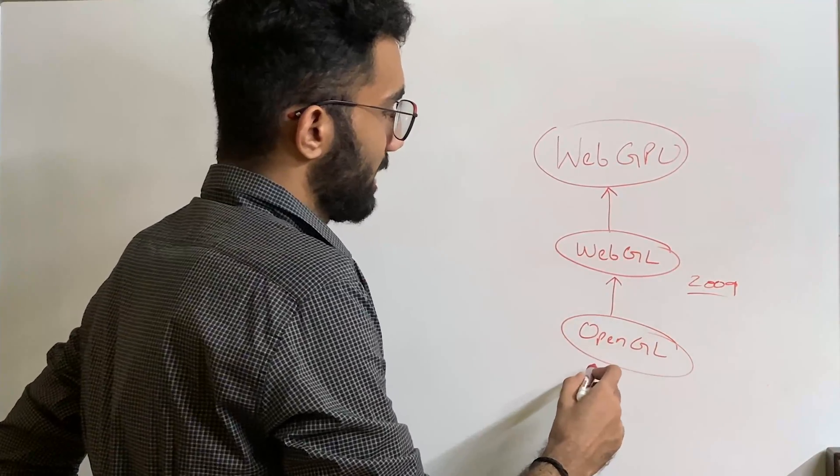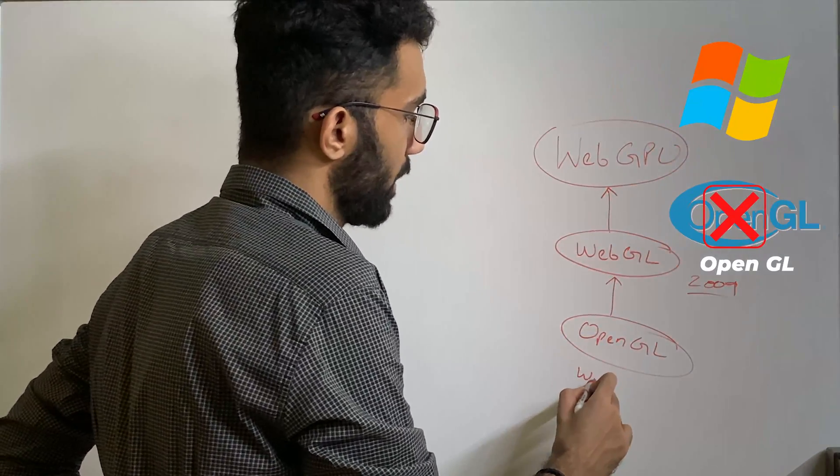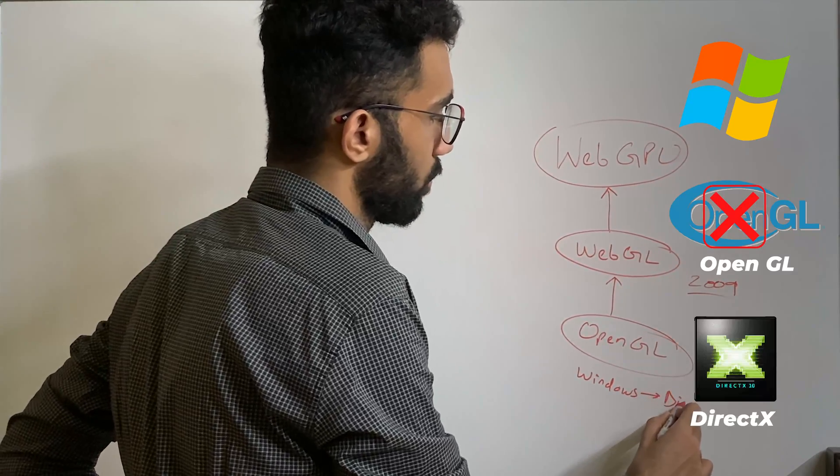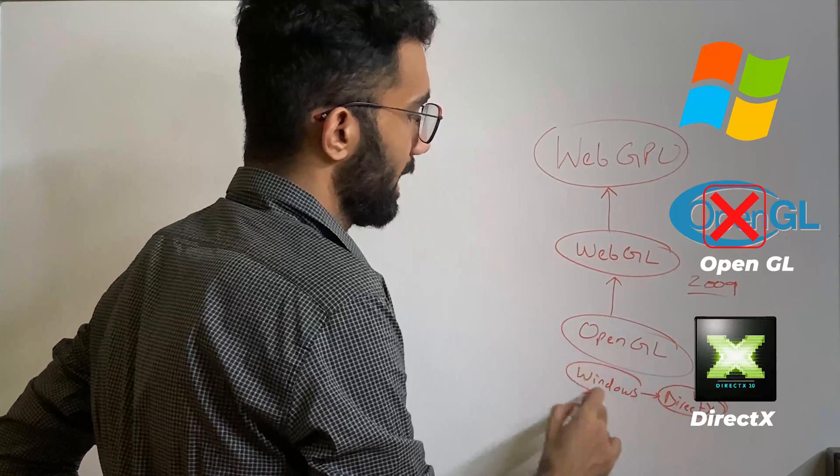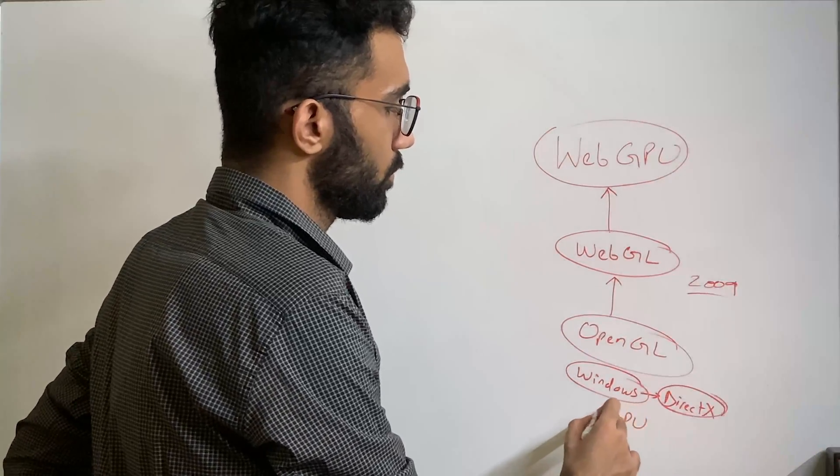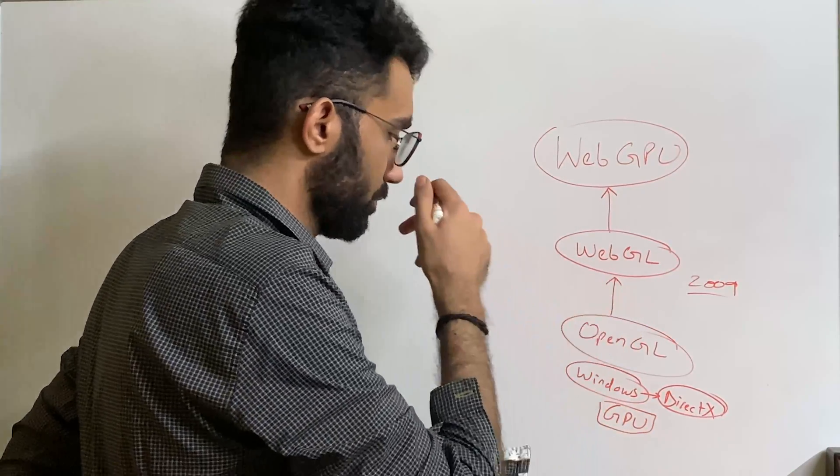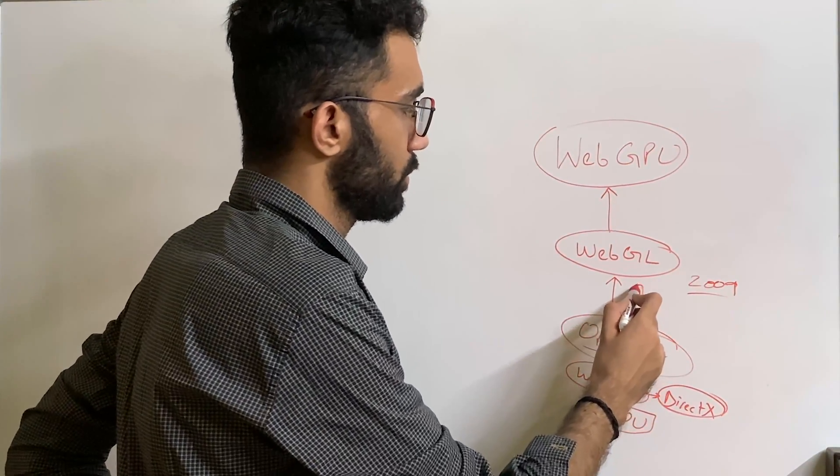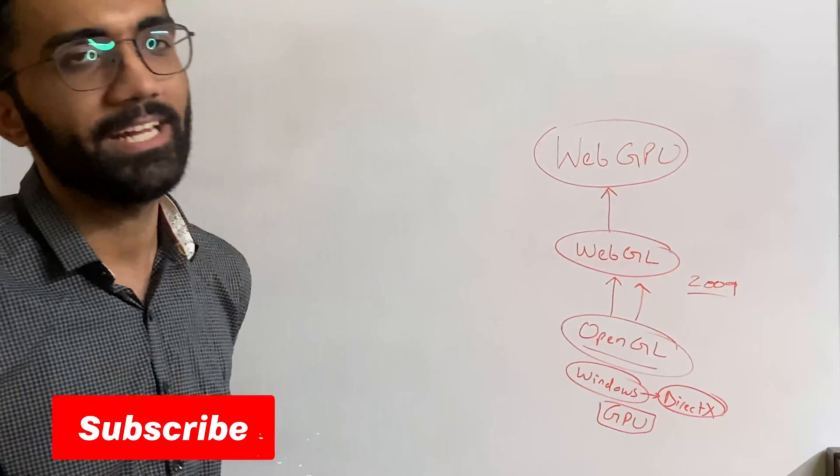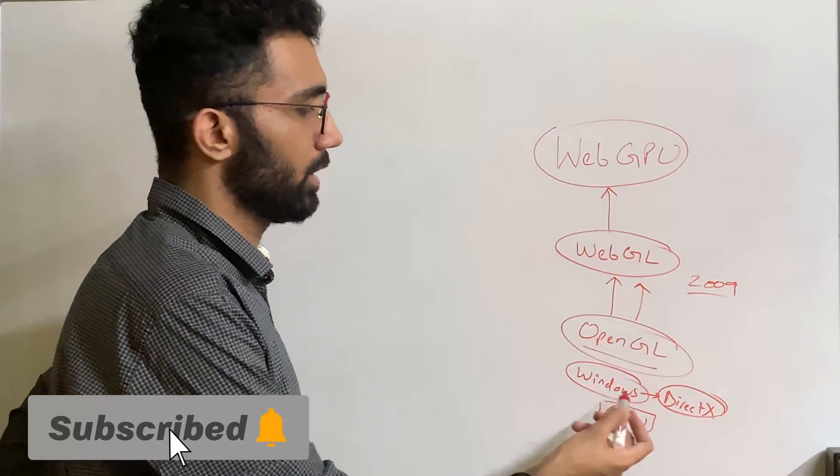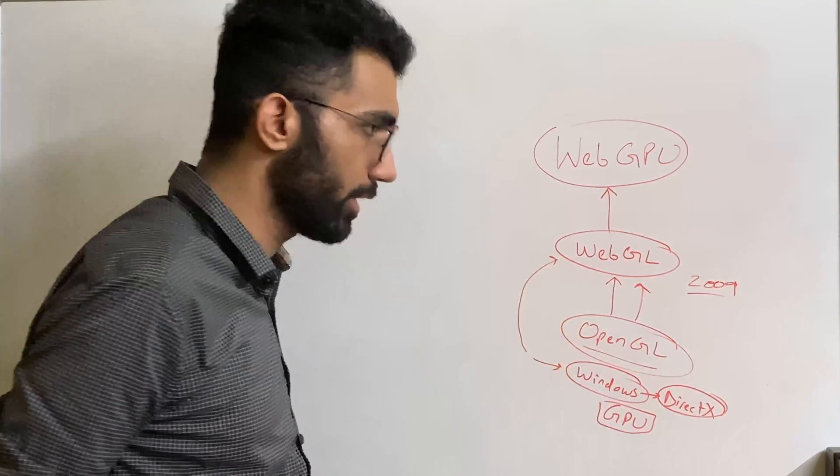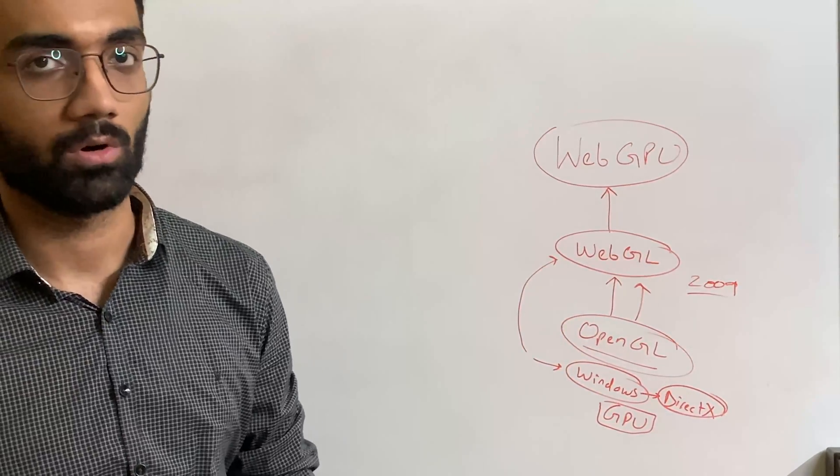Now, the problem here was that OpenGL was not used by Windows. So Windows actually used DirectX or their own system for interacting with the GPU. So WebGL, although it started as a project to bring the OpenGL APIs to the web, had to do small detour when you were running a browser on Windows. So the APIs would be radically different, the mapping would be different and so on.